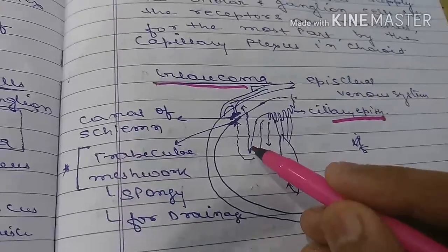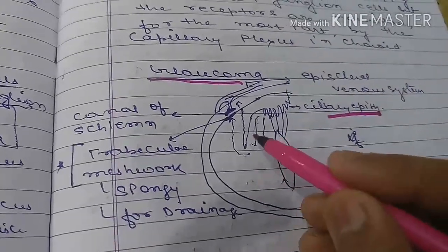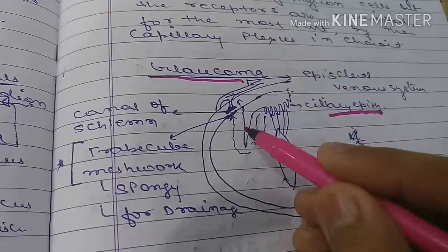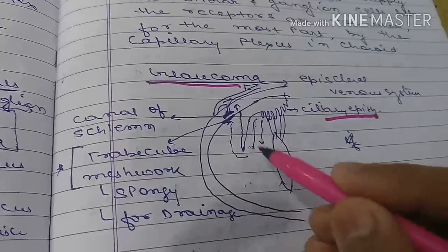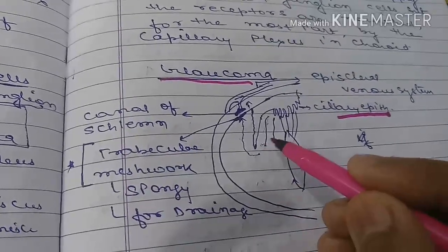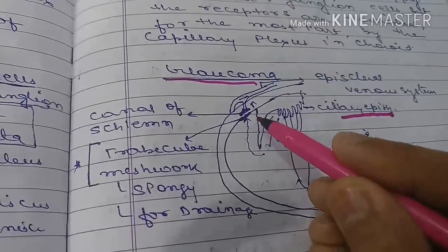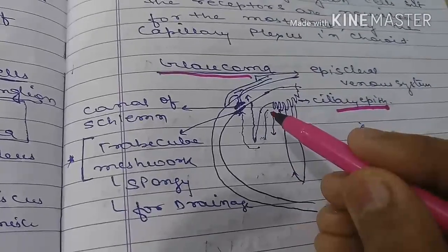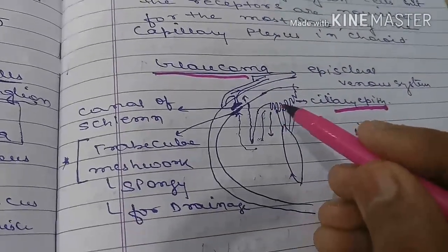Aqueous humor divides into two parts due to the iris: the anterior chamber and the posterior chamber. Aqueous humor is secreted by the ciliary epithelium in the posterior chamber.